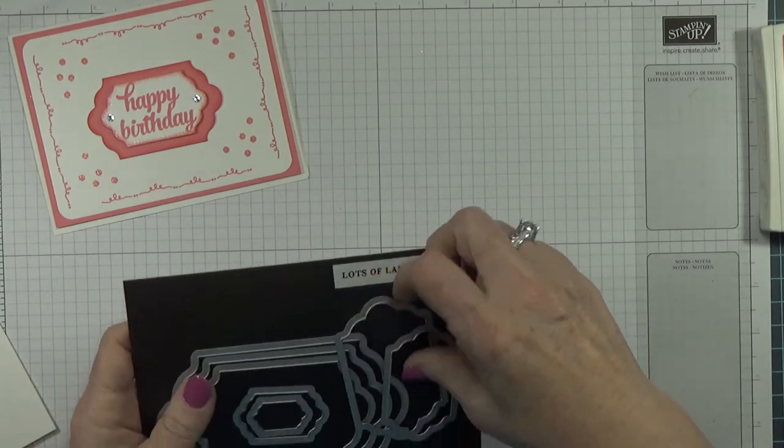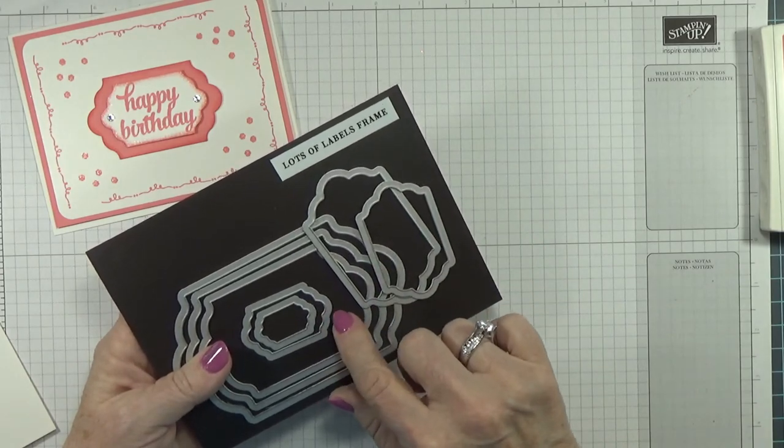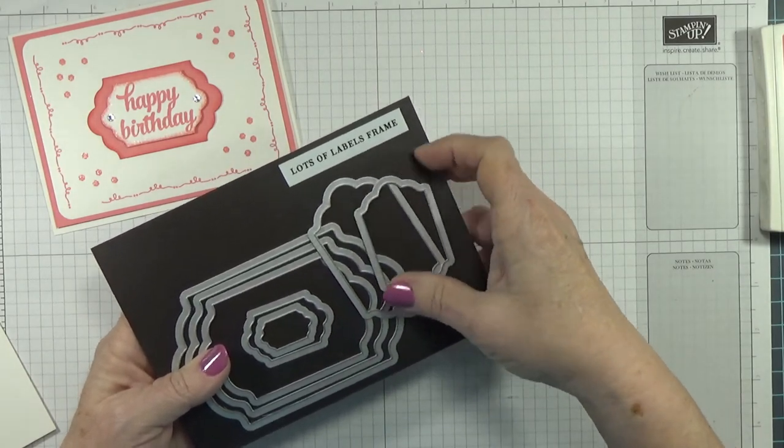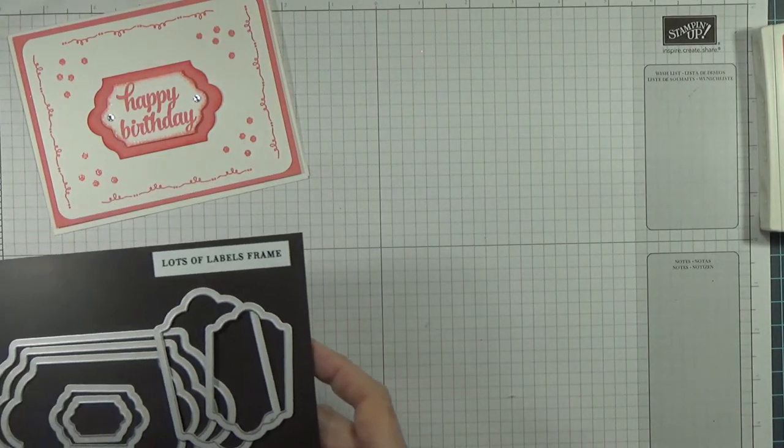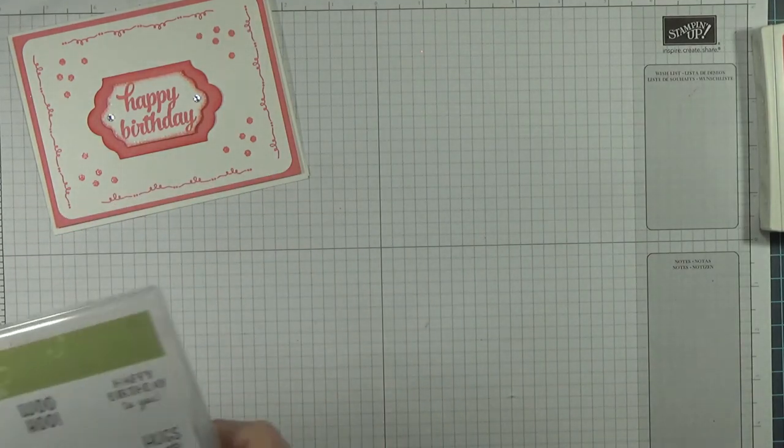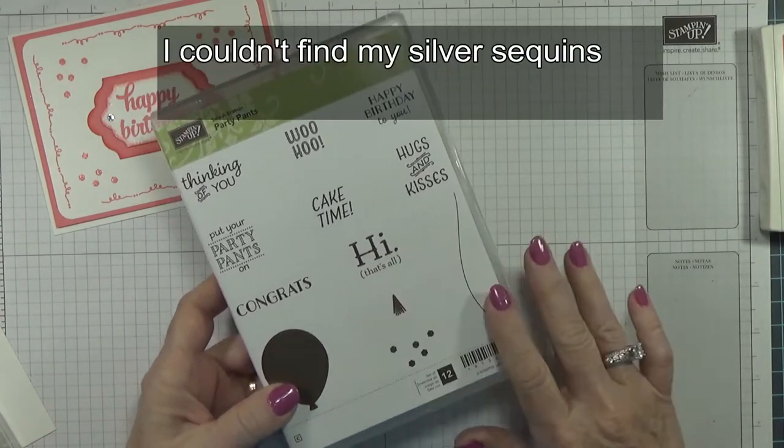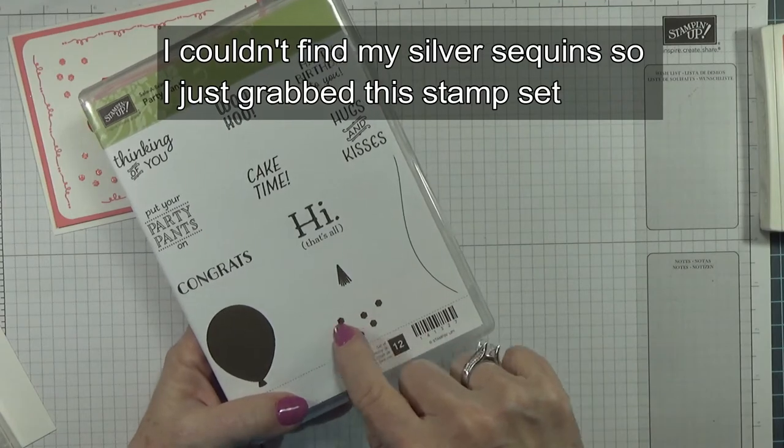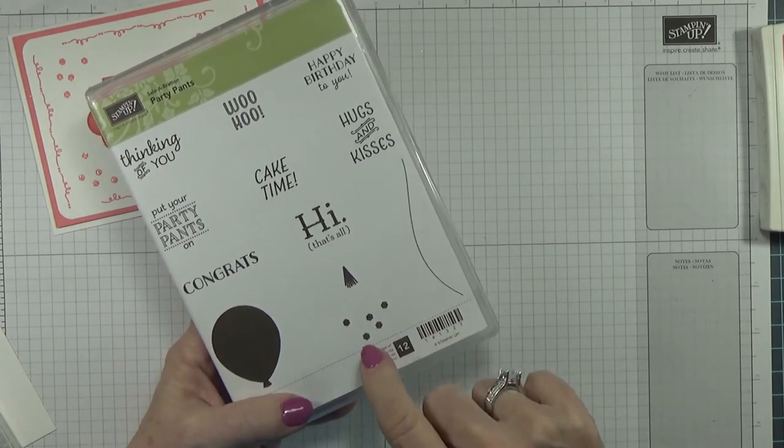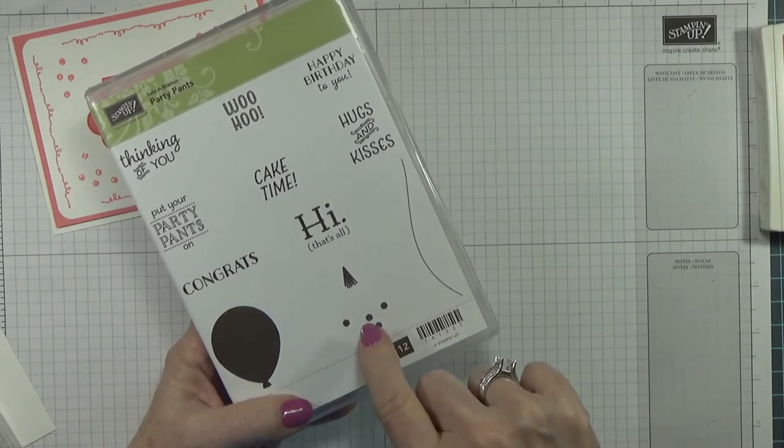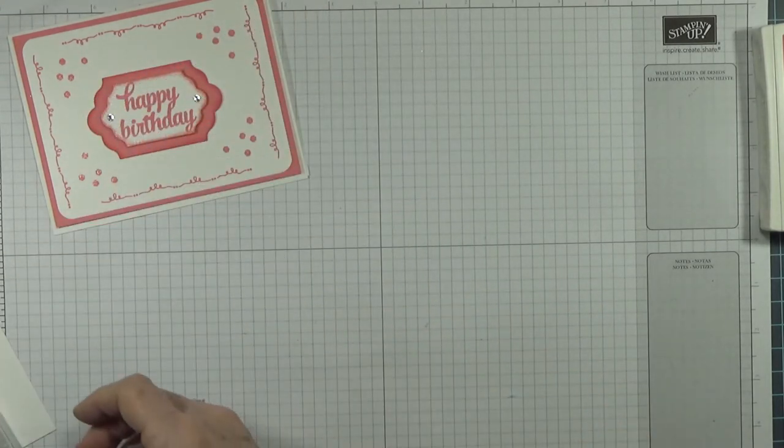I am using the Lots of Label Frames, and I'm using the third and fourth one out. I'm also going to be using, I am cheating on this card because this is a Celebration stamp set that is no longer available, but it had these little sequins on it and she likes bling.